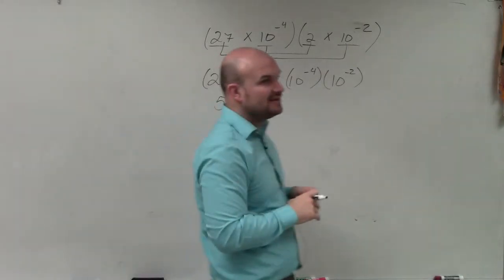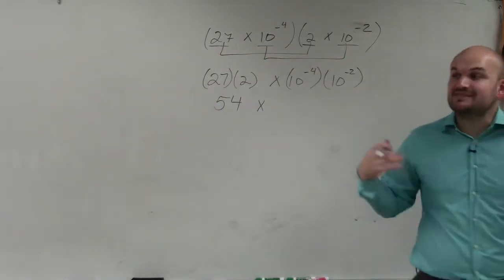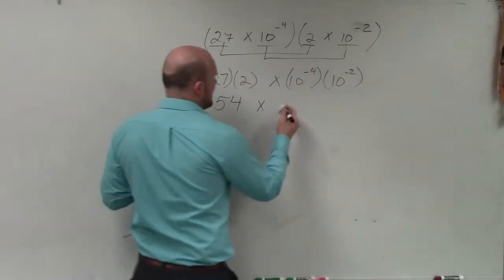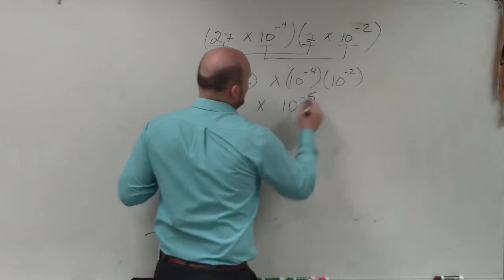Now, how do you multiply 10 raised to a power? Those are exponents. Since the exponents have the same base, you add the powers. So that's 10 to the negative sixth.